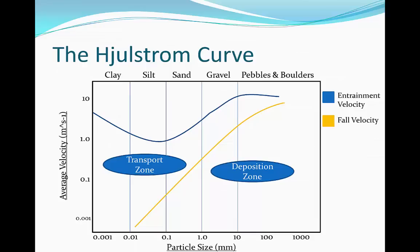The last zone is the erosion zone, and this is located above the entrainment velocity. At this point the river has so much energy that particles can be picked up and they can begin to erode.